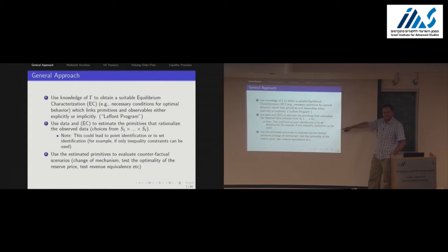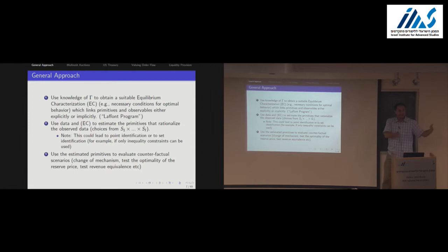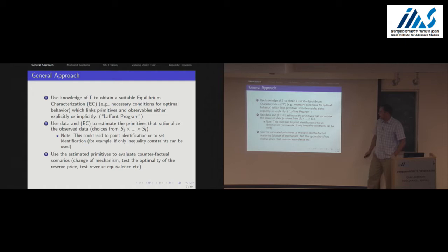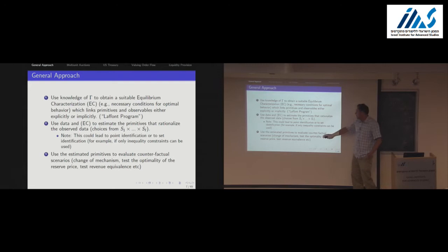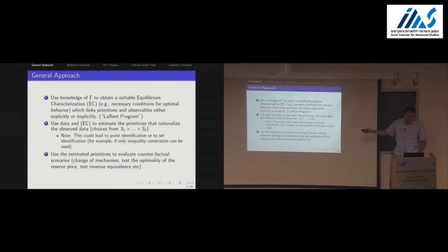This sounds intuitive but in many settings is not as easy as it sounds. For example, if you have multiple equilibria, how do you deal with that? Sometimes you might get point identification — under a lot of assumptions you will. But if you don't want to be dogmatic about the information structure, you might get set identification. This would typically arise if you only impose inequality constraints. And then the third step — once you have these primitives — is to use them to evaluate what else we can do: switch an auction mechanism, put in a reserve price, test revenue equivalence.